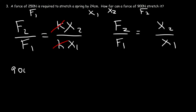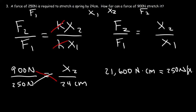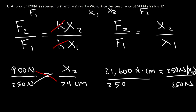So replacing F2 with 900 newtons and F1 with 250 newtons, our goal is to calculate x2, where x1 is 24 centimeters. Cross multiplying gives 900 times 24 equals 21,600 newton-centimeters, equal to 250 newtons times x2. Dividing both sides by 250 newtons, the newtons cancel, leaving x2 in centimeters. So it's 21,600 divided by 250, giving x2 equals 86.4 centimeters — the same answer.